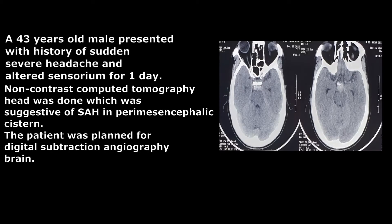A 43-year-old male patient presented with a history of sudden severe headache and altered sensorium for the last one day. Non-contrast CT head was suggestive of subarachnoid hemorrhage in the perimesencephalic system. The patient was planned for digital subtraction angiography of the brain.